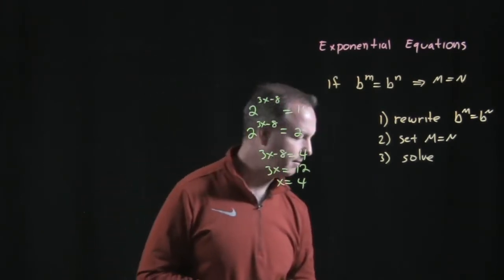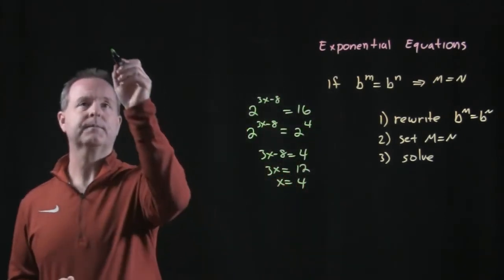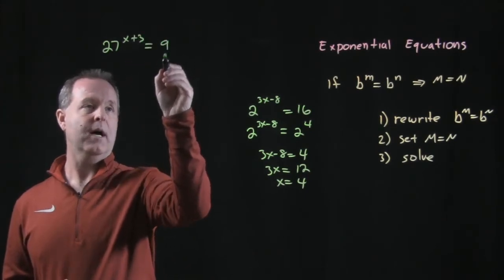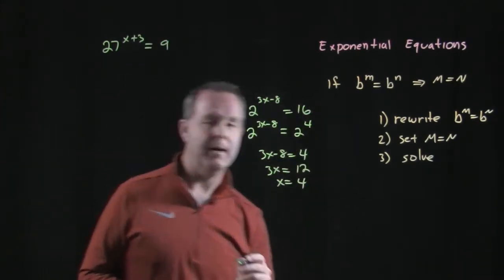Alright, let's add another piece to it. I have 27 to the x plus 3 equals 9 to the x minus 1.